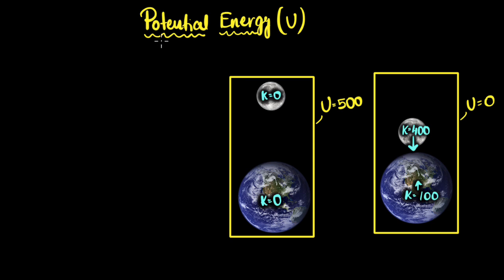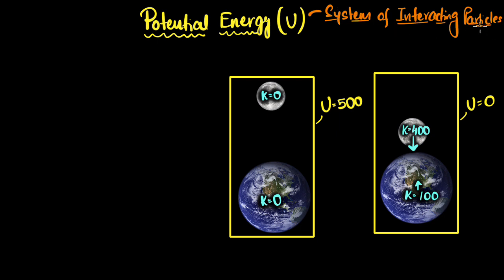We are now ready to understand the key features of potential energy. First, potential energy is a number we assign to a system of interacting particles, because if there are no forces of interaction between them, the concept of potential energy wouldn't make sense. So it only makes sense when dealing with a system of particles interacting with some force. When dealing with gravitational force, the potential energy is called gravitational potential energy. With electric forces, we have electric potential energy; with nuclear forces, nuclear potential energy, and so on.